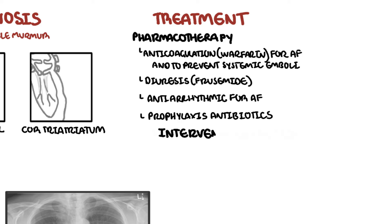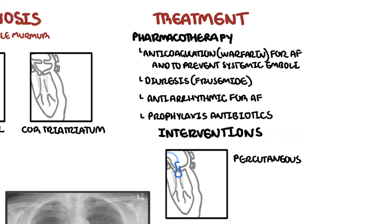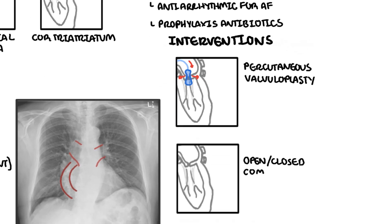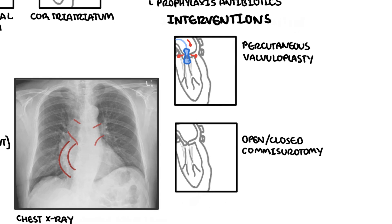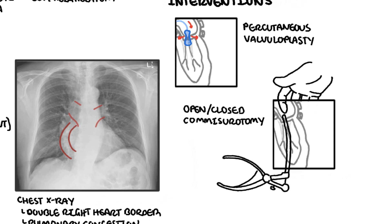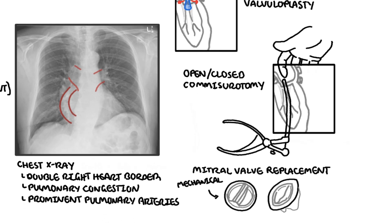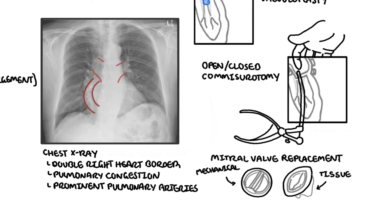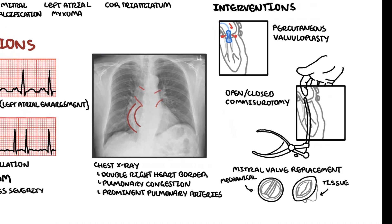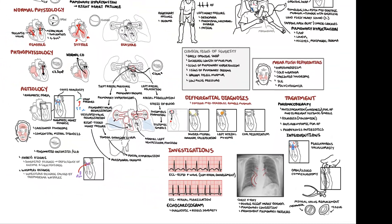Interventions for mitral stenosis include percutaneous valvuloplasty, where a balloon is placed within the mitral valve to dilate it; open or closed commissurotomy; and mitral valve replacement, which can be mechanical or bioprosthetic. In summary, mitral stenosis is obstruction of blood flow from the left atrium to the left ventricle, causing a mid-diastolic murmur, with the main cause being rheumatic heart disease.